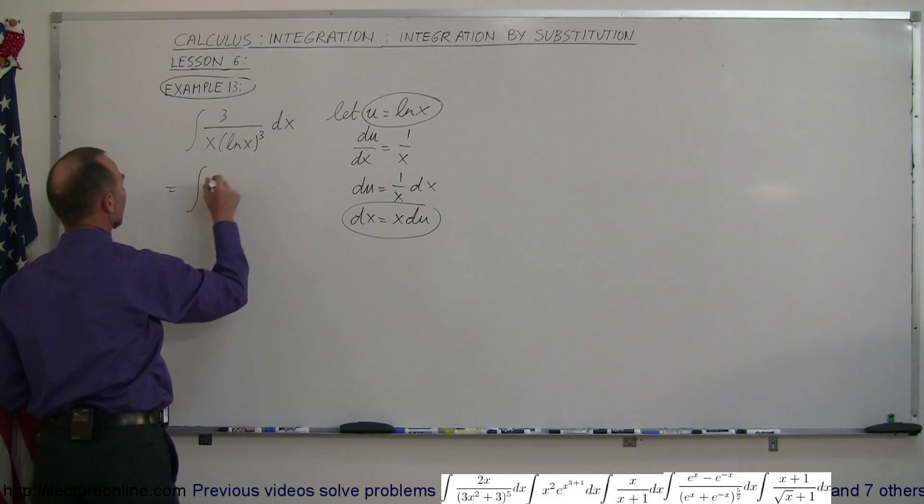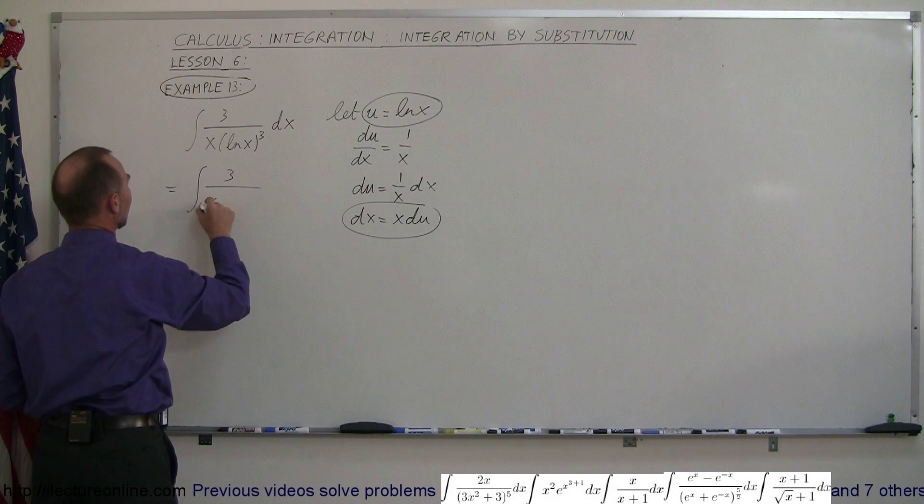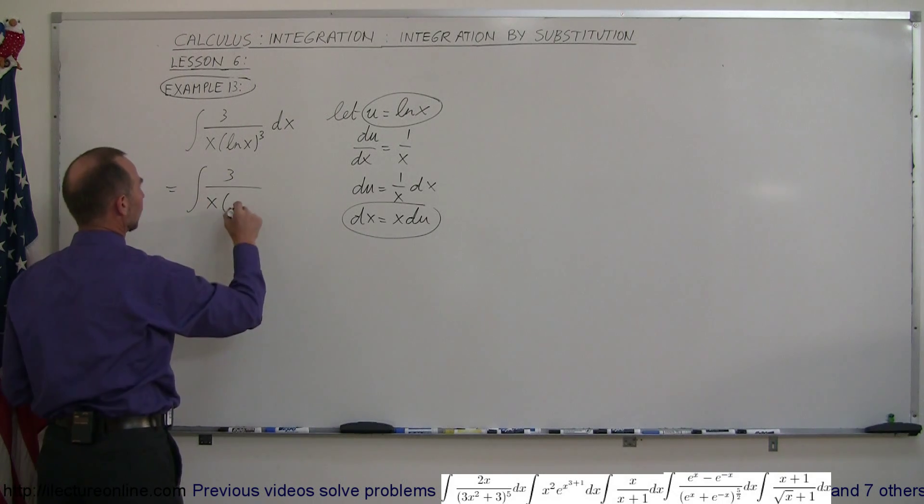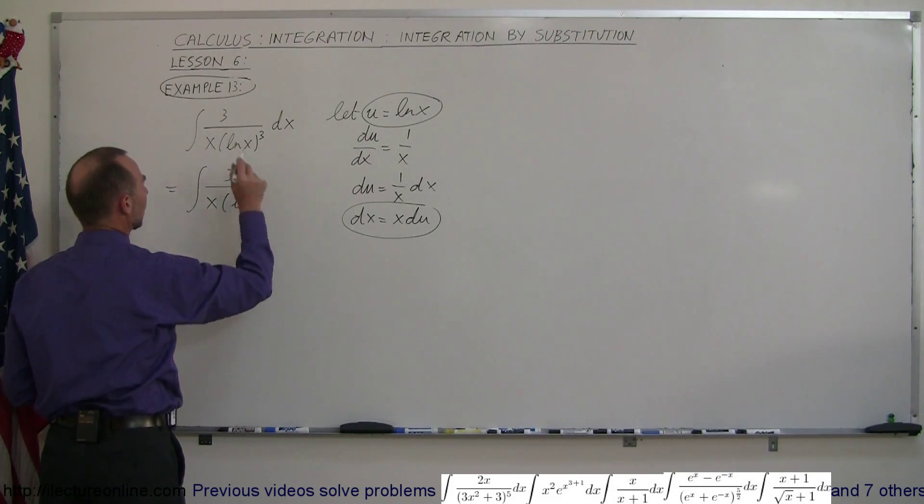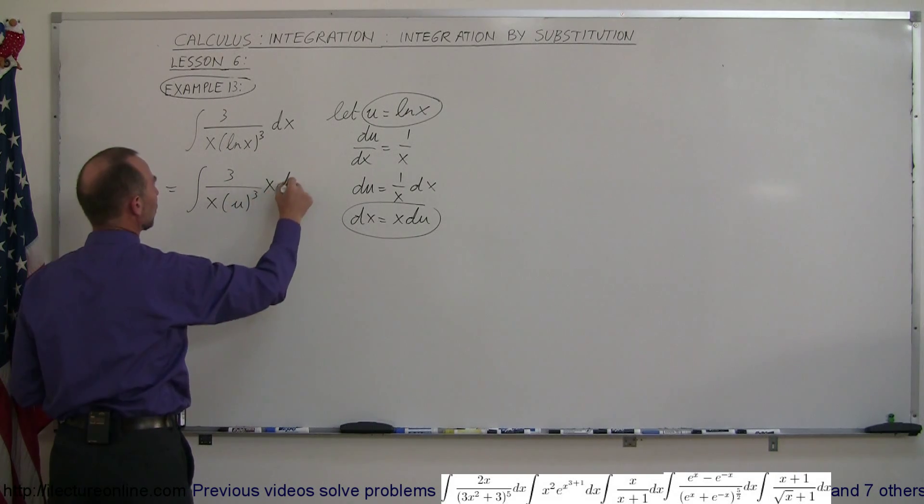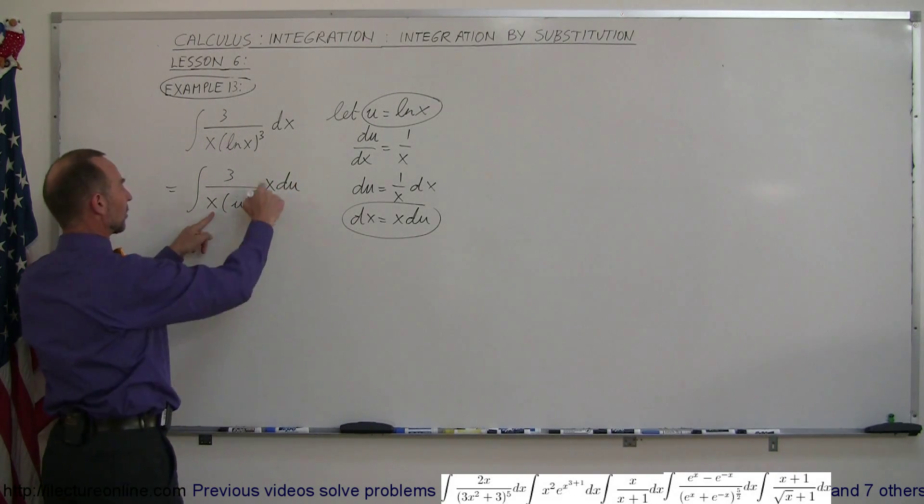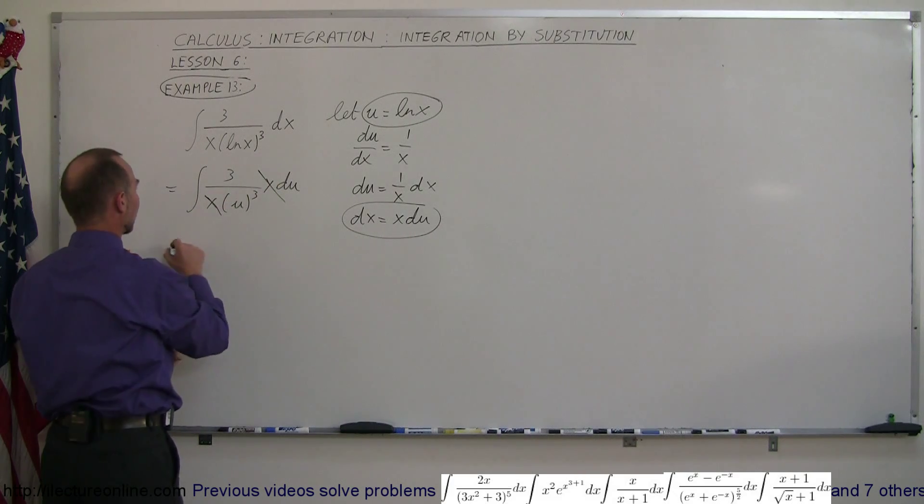That means this is equal to the integral of 3 divided by x times, instead of natural log of x we write u to the third power, instead of dx we write x du. And then notice how this x and this x cancels out, and we're left with...